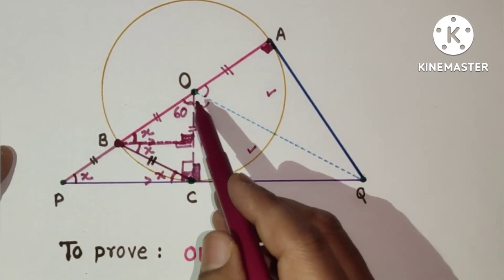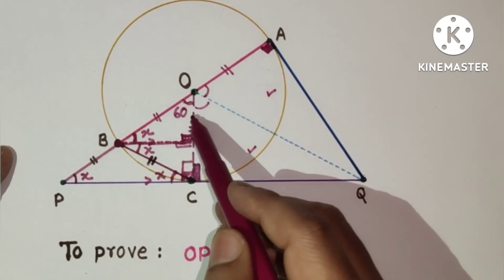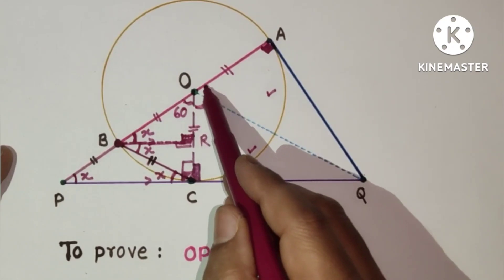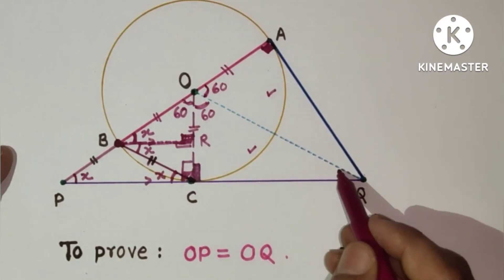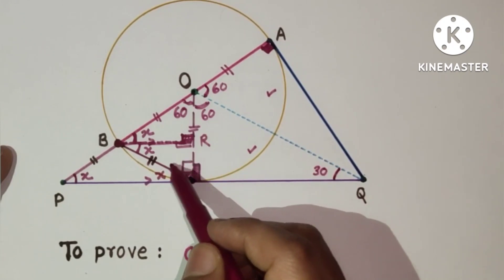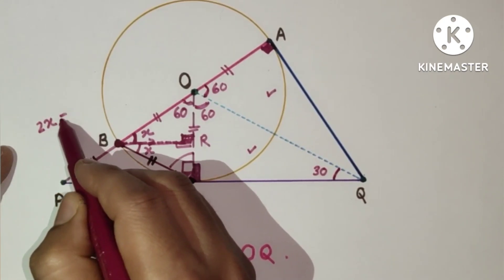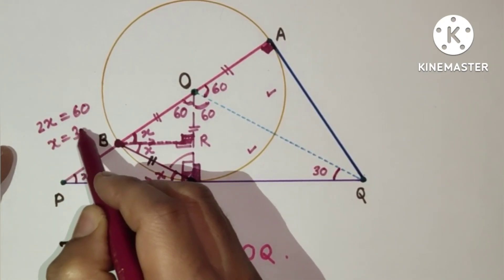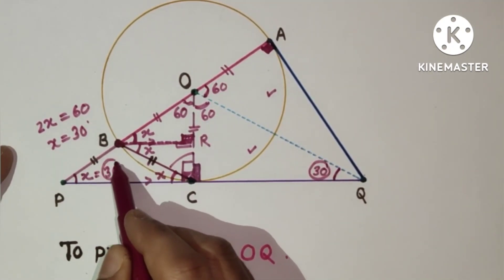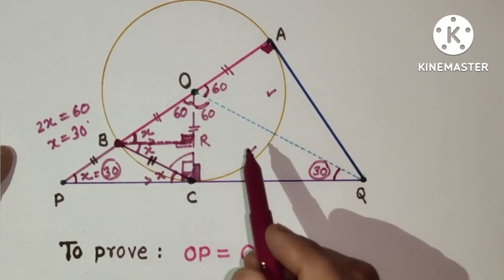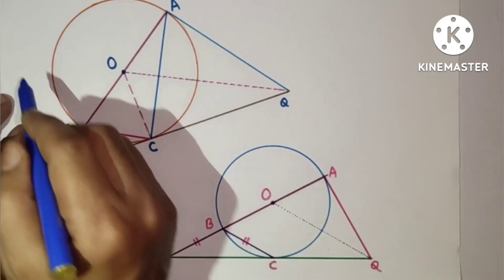Since the equilateral triangle gives 60°, this angle is 60°, and the supplementary angle will be 120° by linear pair (60° + 120° = 180°). With the equal angles both being 60°, all three are 60°. If this is 60° and this is 90°, this will be 30°. Since 2x equals 60°, x equals 30°. Therefore this is 30° and this is 30°. Since the base angles of triangle OPQ are equal — each is 30° — we can say that OP equals OQ.